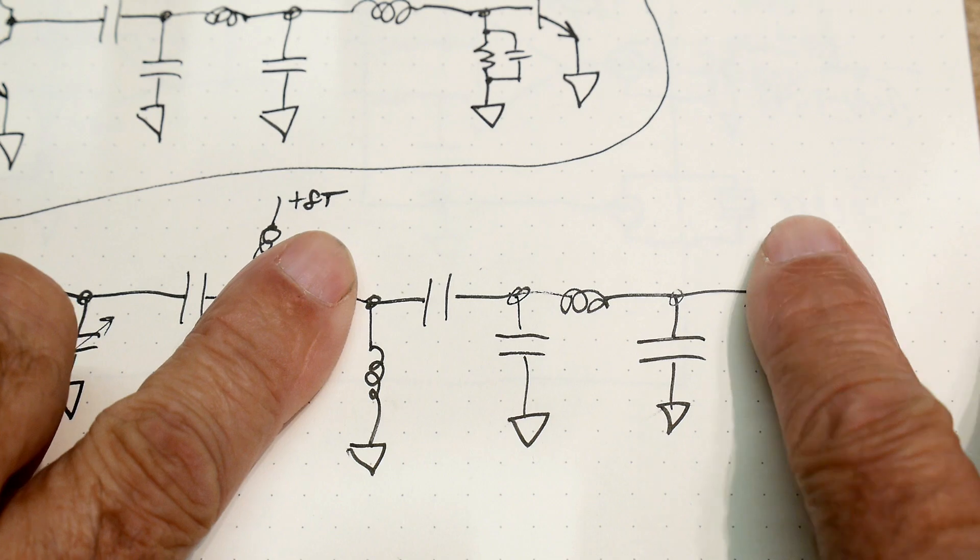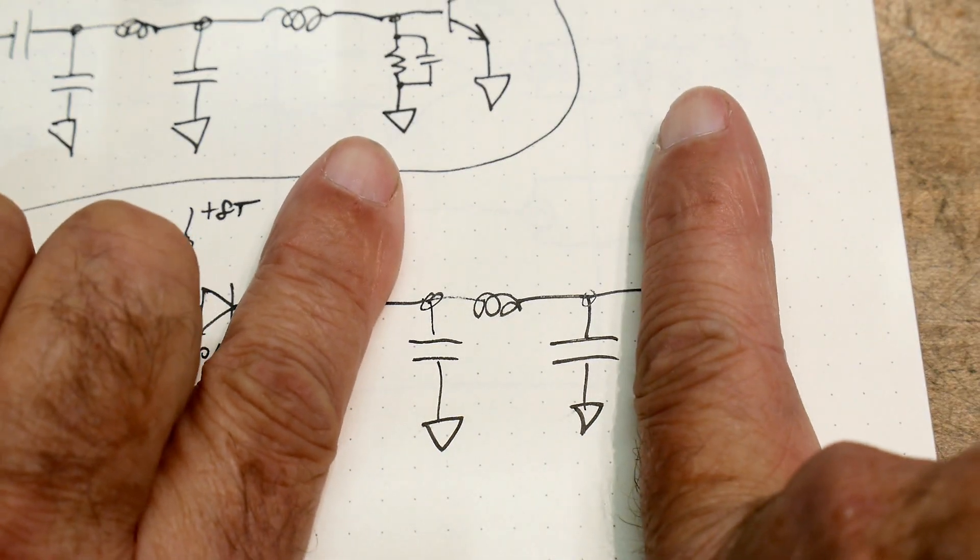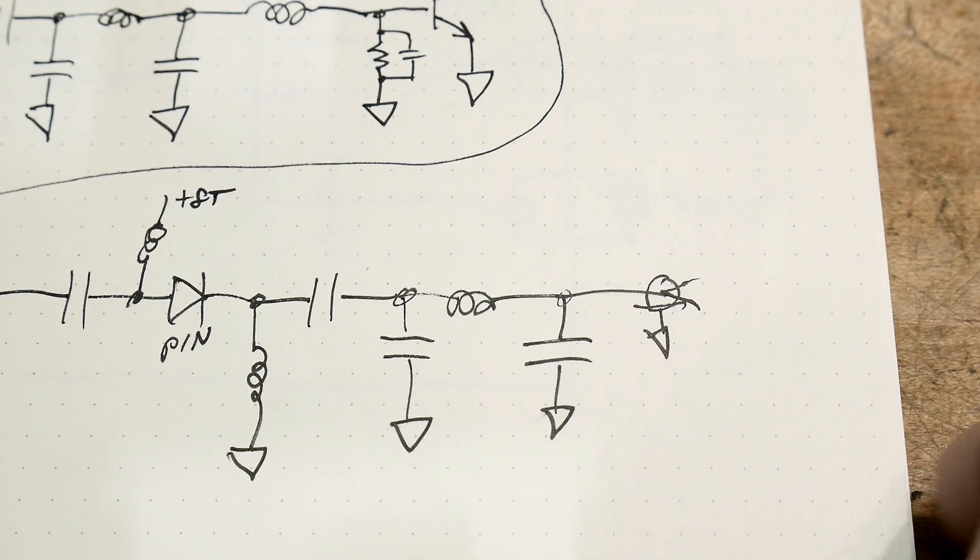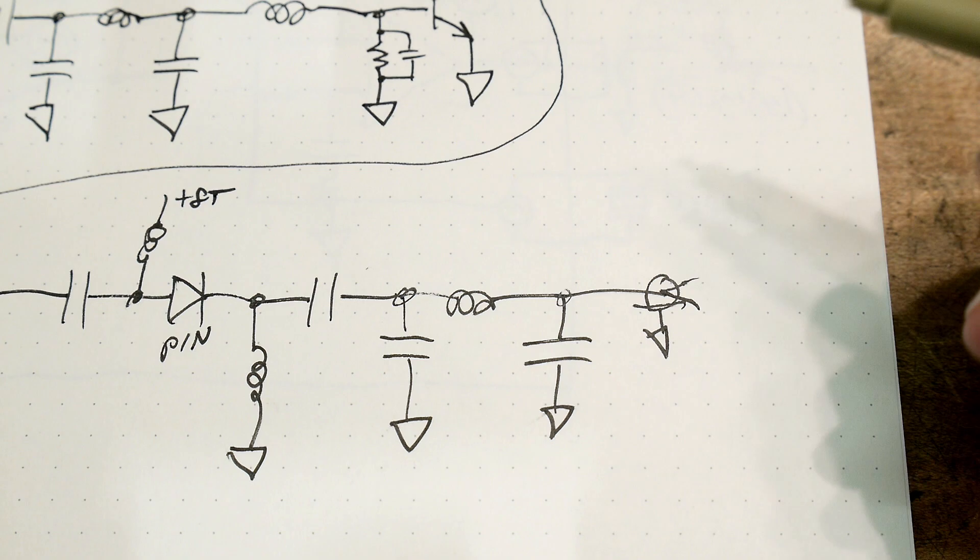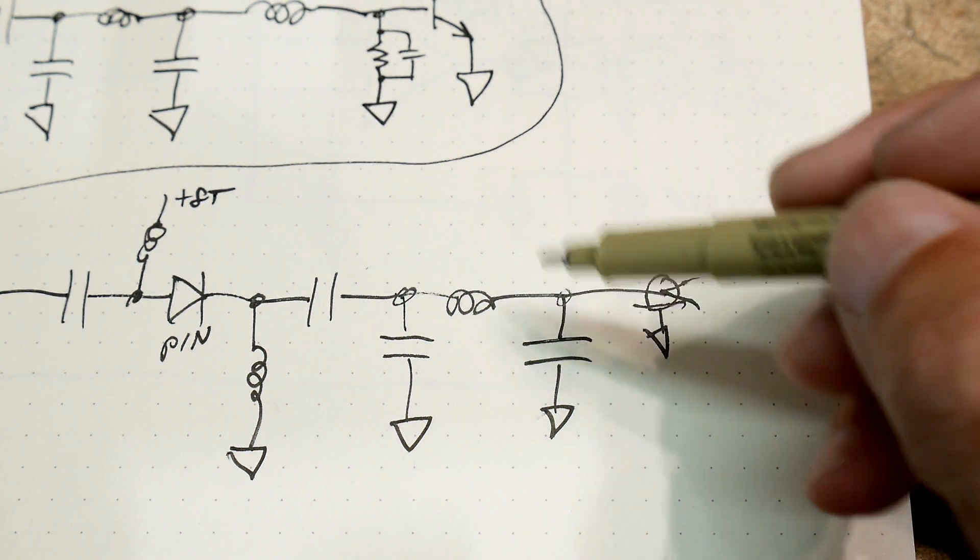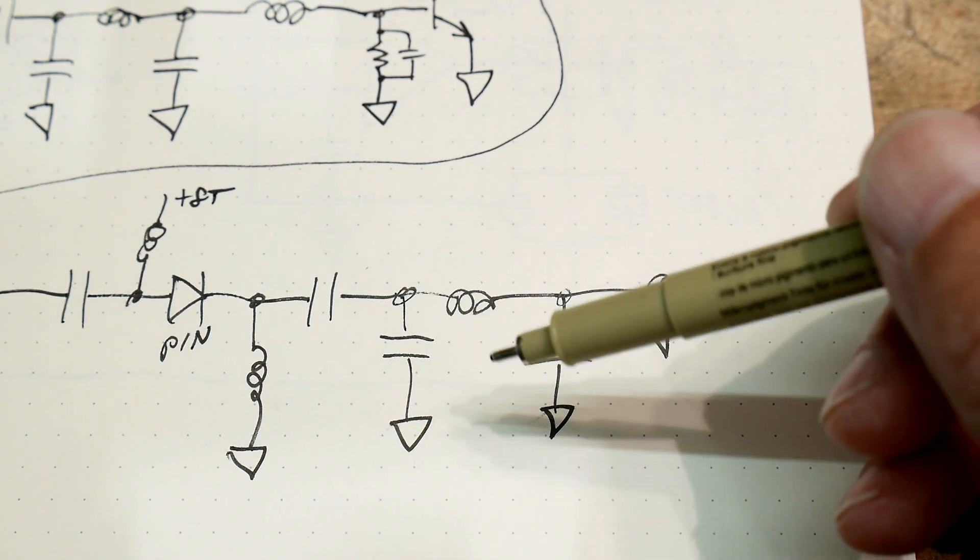And again, it goes through another filter before it ends up in the real world. Now, I don't know if this filter is sufficient enough to keep the spurious harmonics and everything down on this radio. It looks like it might be a little bit wimpy, but it's trying.